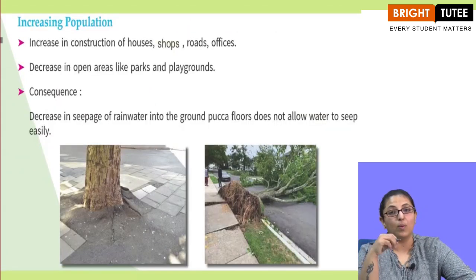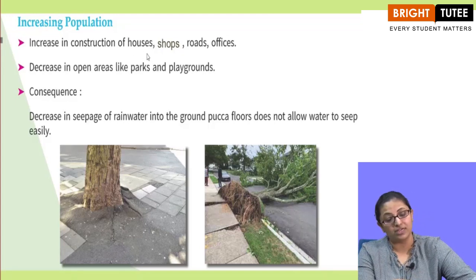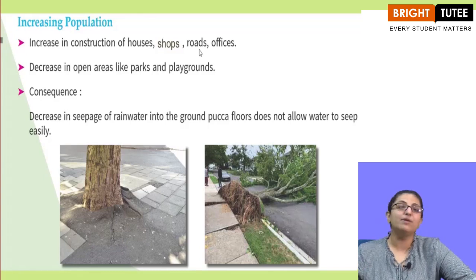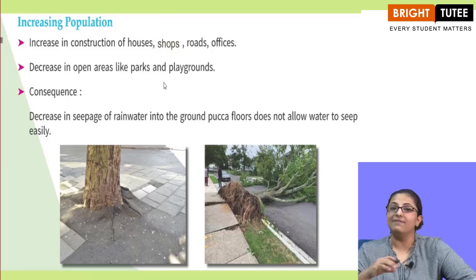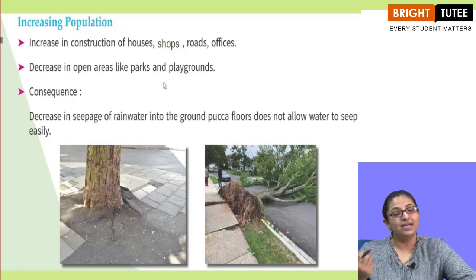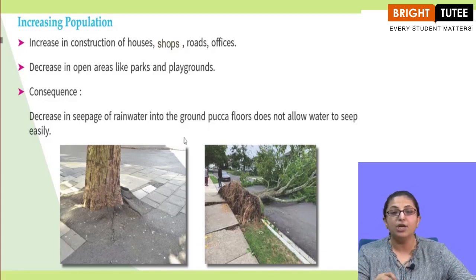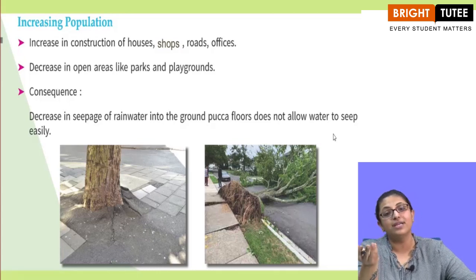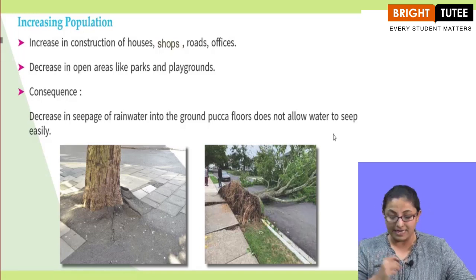The first factor is increasing population. Increase in construction of houses, shops, roads and offices leads to more concrete ground, which means less seepage of water. There is also a decrease in open areas like parks and playgrounds, resulting in less seepage of rainwater into the ground. Pakka floors do not allow water to seep easily, so because of increasing population the water table decreases.